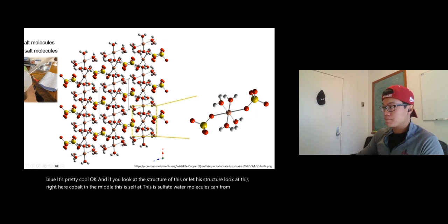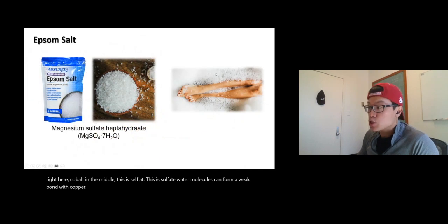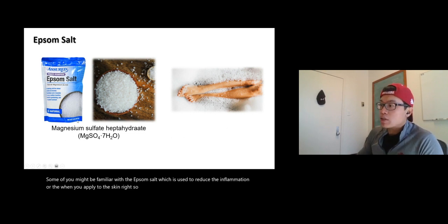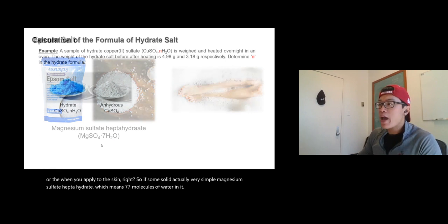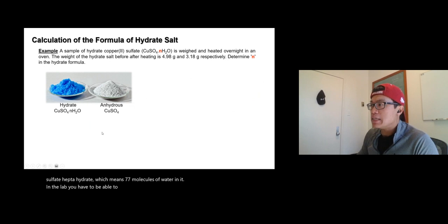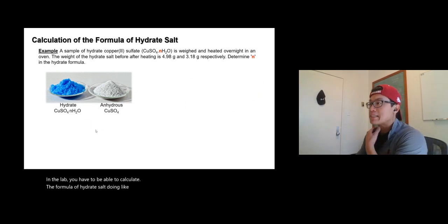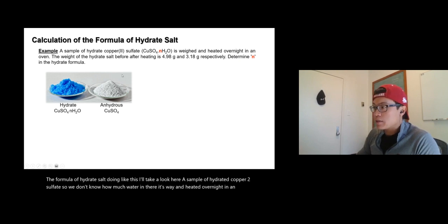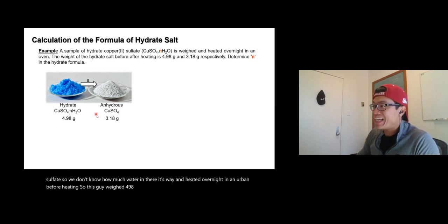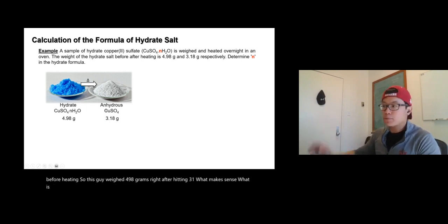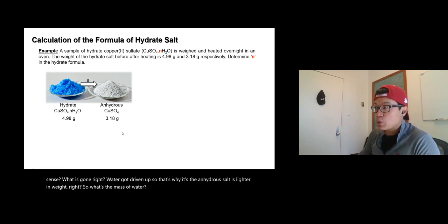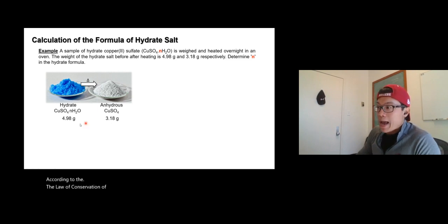Anhydrous copper sulfate is a white powder, but when it absorbs water it turns blue — pretty cool. You can see water molecules forming weak bonds with the copper in the structure. You may also be familiar with Epsom salt — magnesium sulfate heptahydrate — which has seven water molecules and is used to reduce inflammation when applied to the skin.